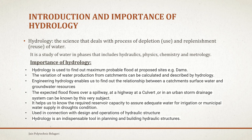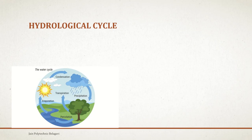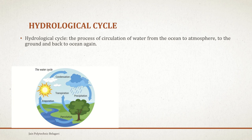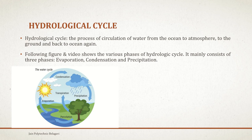Hydrology is an indispensable tool in planning and building hydraulic structures. Now we will be discussing the water cycle or hydrological cycle. This is the process of circulation of water from ocean to atmosphere, from atmosphere to the ground, and back to the ocean again. The water cycle mainly consists of three phases: evaporation, condensation, and precipitation.